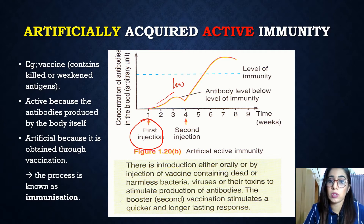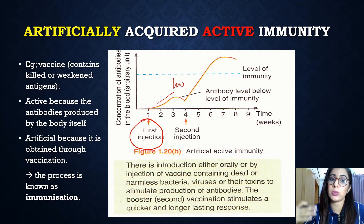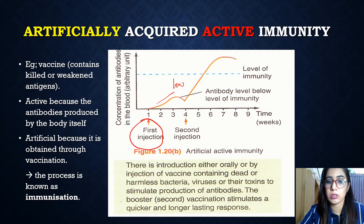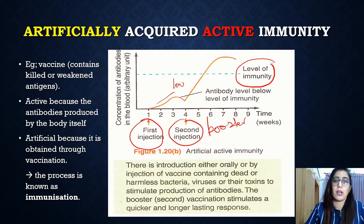Since the first injection is insufficient to protect the individual from the disease, a booster dose must be administered to increase antibody production to a level of immunity. This second injection — the booster — will increase the antibody level above the immunity level.